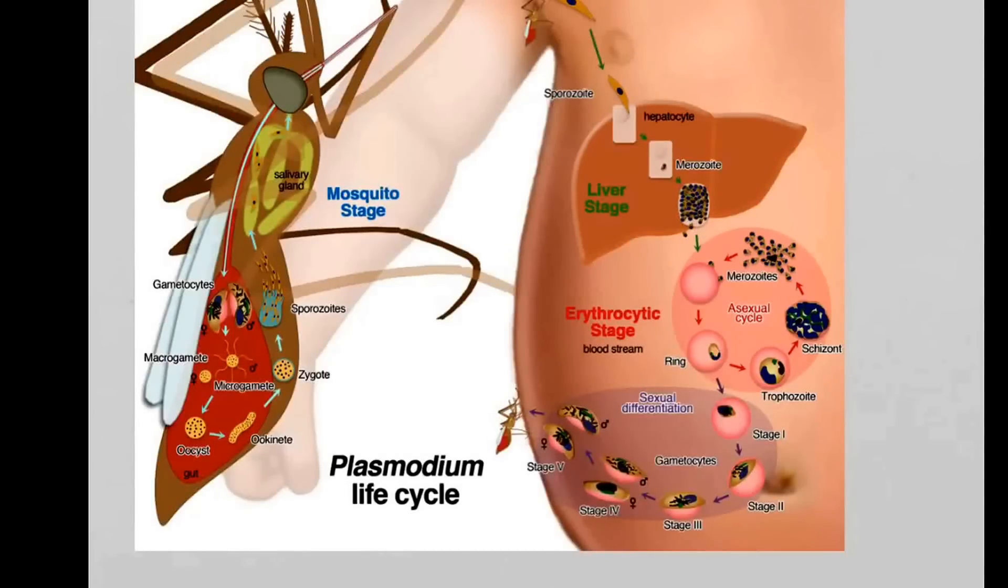We have got thousands of these merozoites, and they are released into the bloodstream. In the bloodstream, they sniff out the red blood cells and invade them. These merozoites invade red blood cells, first form a ring, and then they will grow up and convert into what is called the trophozoite.